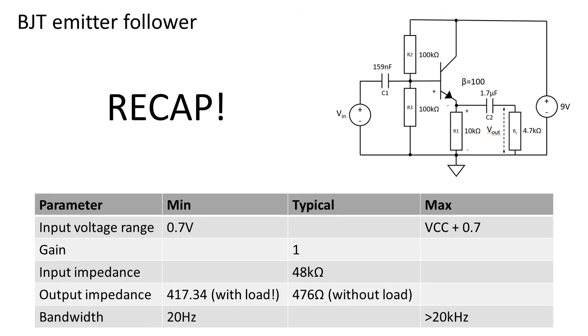As a recap, I put all parameters of this buffer together in a table. The input voltage range is 0.7 volts up to VCC plus 0.7 volts due to the base emitter voltage. The gain is approximately 1 for DC signals and 1 for AC signals.